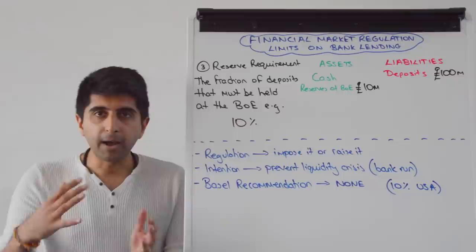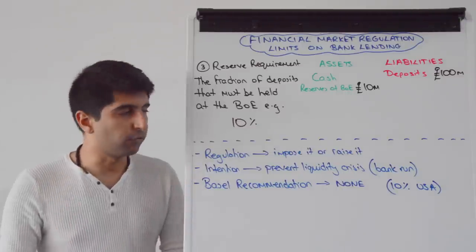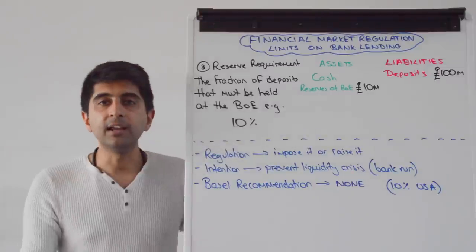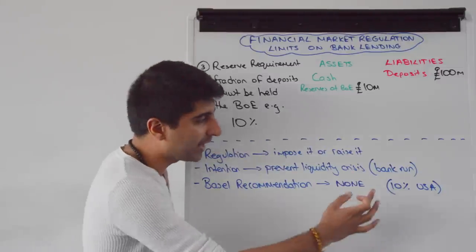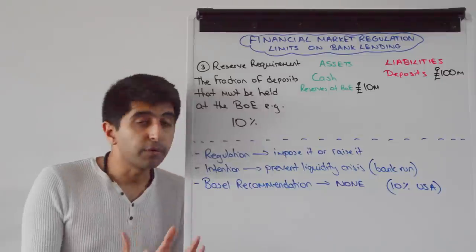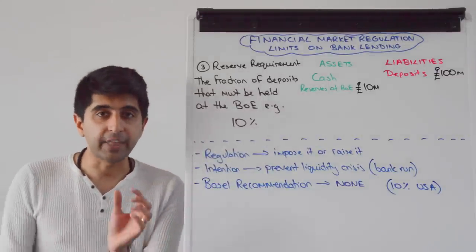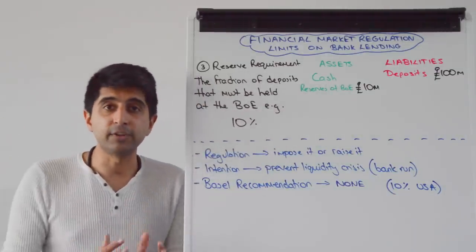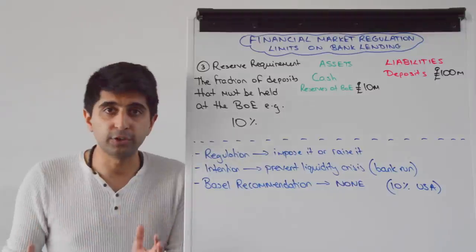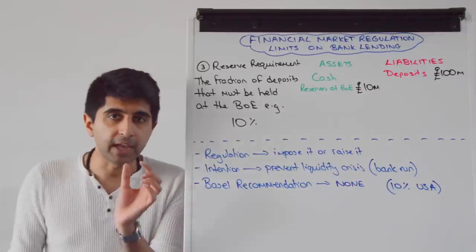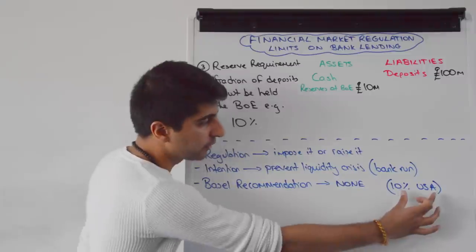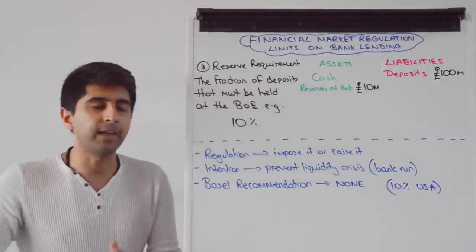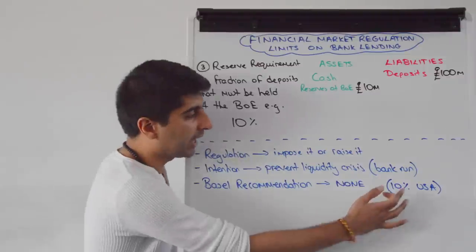There is no Basel recommendation over reserve requirements. However, in the USA the Federal Reserve have imposed a 10% reserve requirement. The Federal Reserve has the power to change that — to increase it, decrease it, or even scrap it completely. It's a bit more complex in the USA, but for banks of a certain size it stands at 10%.